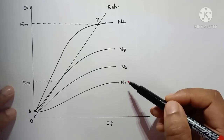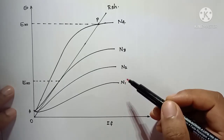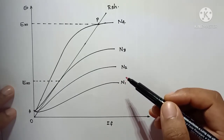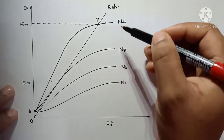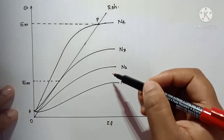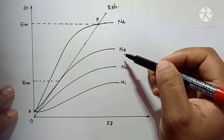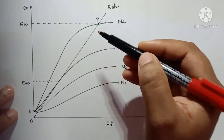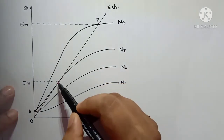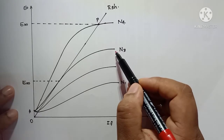If I again decrease the speed, it becomes N2, then N1. At a particular speed, my shunt field resistance will become tangent to the OCC.